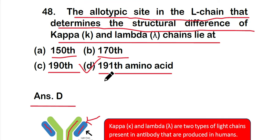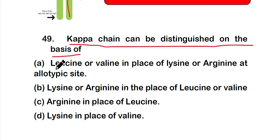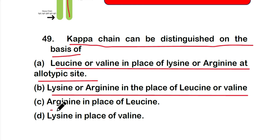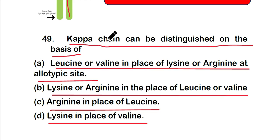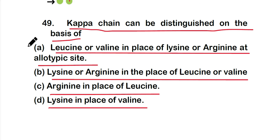Question 49: Kappa chain can be distinguished on the basis of option A leucine or valine in place of lysine or arginine at allotypic site, option B leucine or arginine in place of leucine or valine, option C arginine in place of leucine, or option D lysine in place of valine. The correct answer is option A — kappa chain is distinguished by leucine or valine in place of lysine or arginine at the allotypic site.